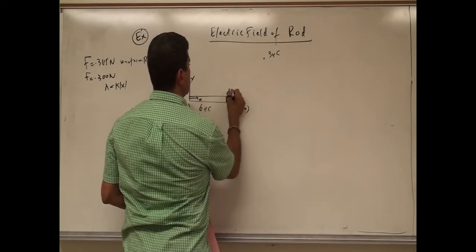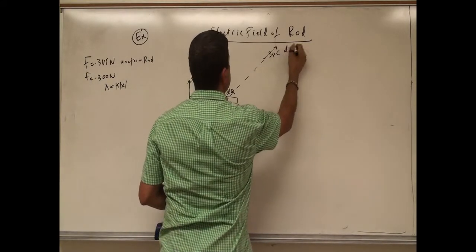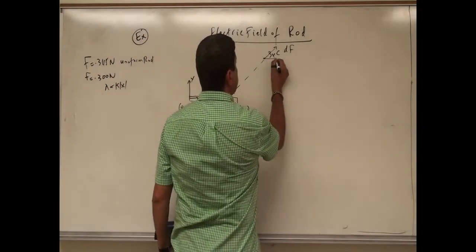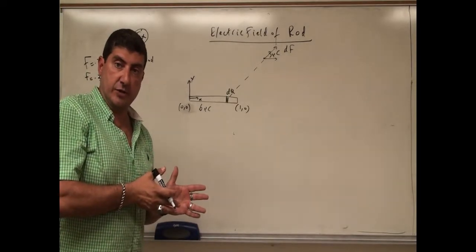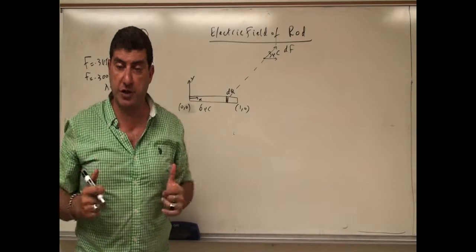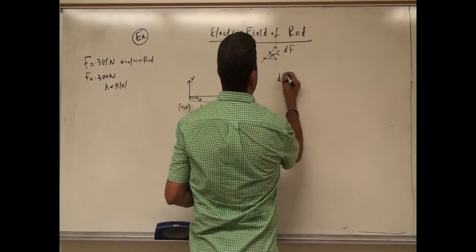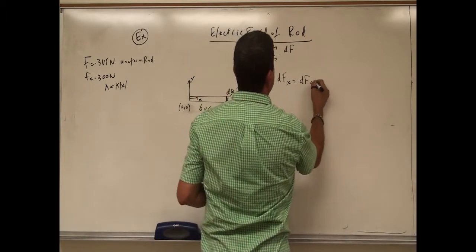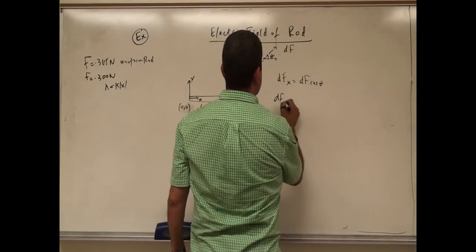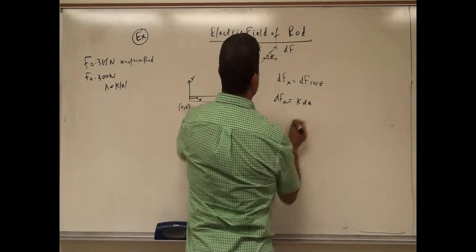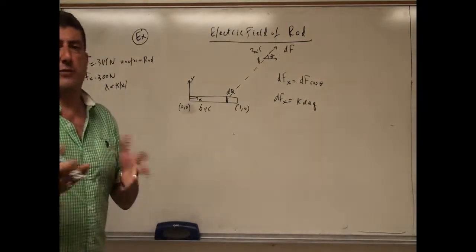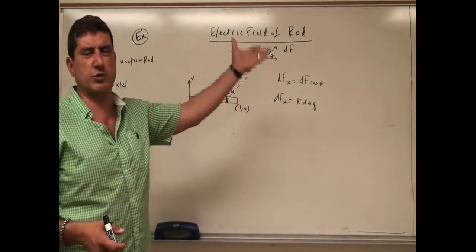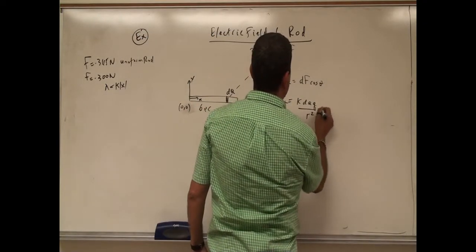We take a piece dq and say it's going to exert a force df on the charge. We take all of those forces and add them up. We have to take the x-component separately and then the y-component separately. Since we're not in the middle of the rod, there's no cancellation. So dfx is equal to df cosine theta. And df is going to be k dq times the little charge q divided by r squared, times cosine theta.